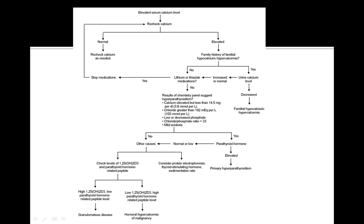If not, you would want to check 1,25-OH2-D3 levels and parathyroid hormone-related peptide. If there's high 1,25-OH2-D3 and low PTHrP, it's probably a granulomatous disease. If there's low 1,25-OH2-D3 and high PTHrP, you're thinking of humoral hypercalcemia of malignancy. If you rule out elevated levels of both, get a protein electrophoresis, TSH level, and sedimentation rate as your last resort. Keep this algorithm in mind as you approach the board exam.